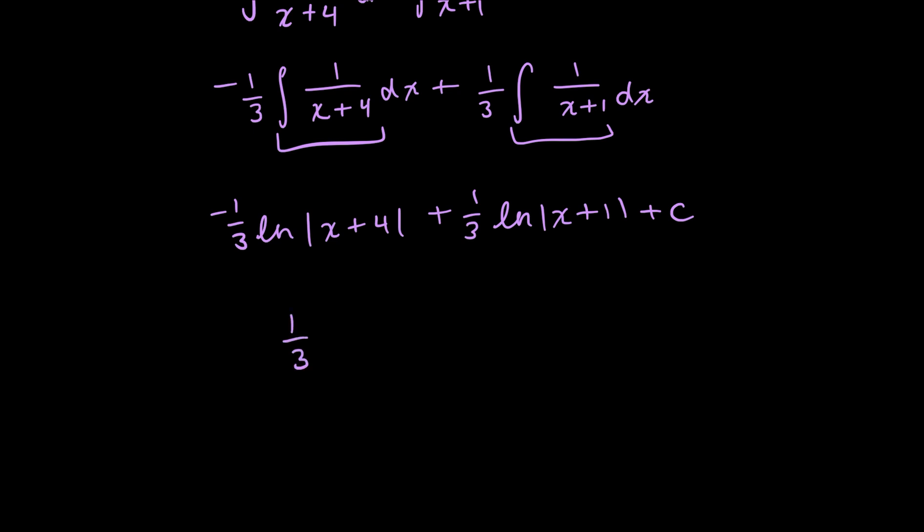So you have 1 third, and because they share the same constants, that's why I could do that, in case that wasn't clear. So I'd have 1 third ln of x plus 1, because this one is positive, over x plus 4, because this one is negative, in that log plus c. And that's it.